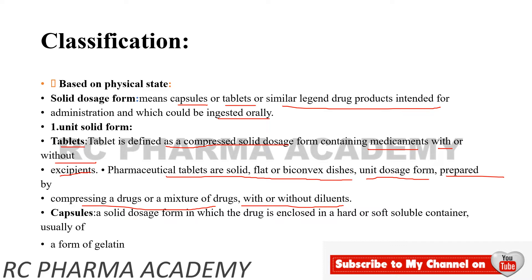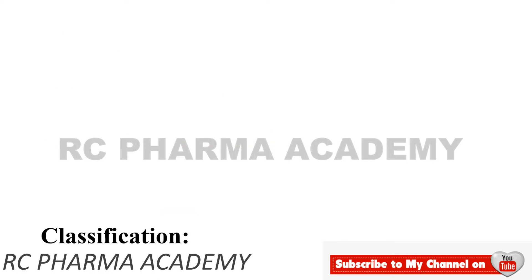A capsule is a solid dosage form which is a hard or soft gelatin container, usually made up of gelatin. Capsules are of two types: soft gelatin capsules and hard gelatin capsules.